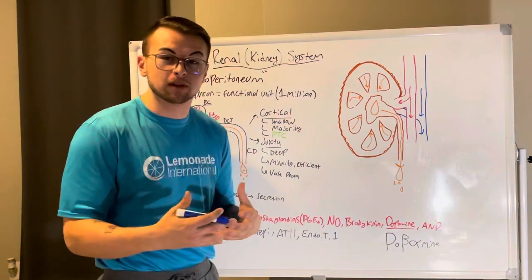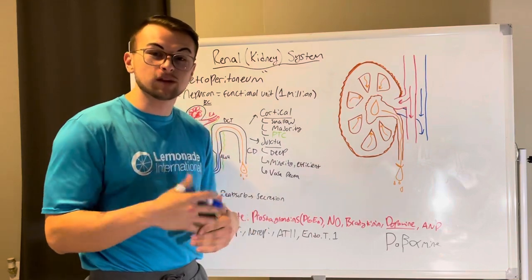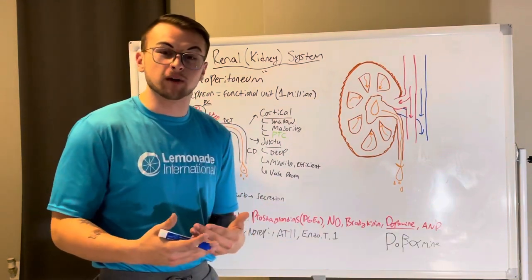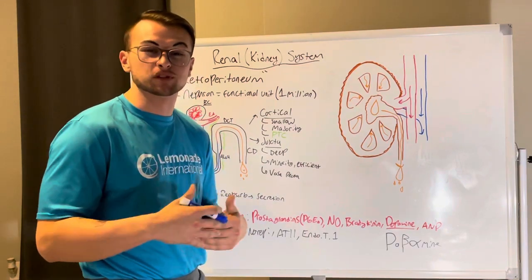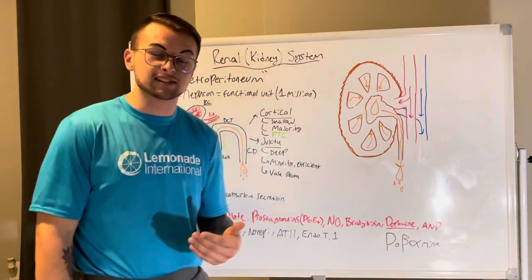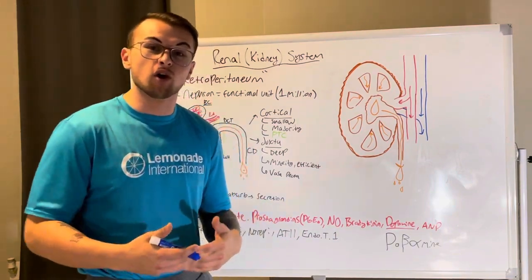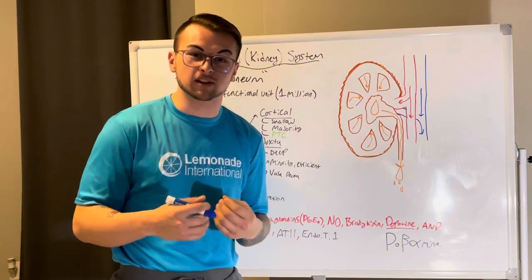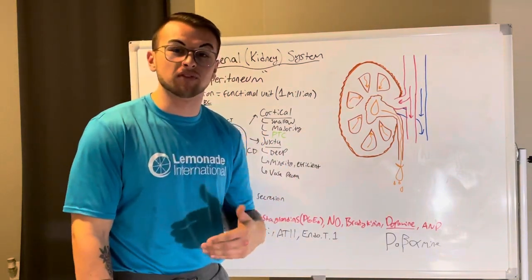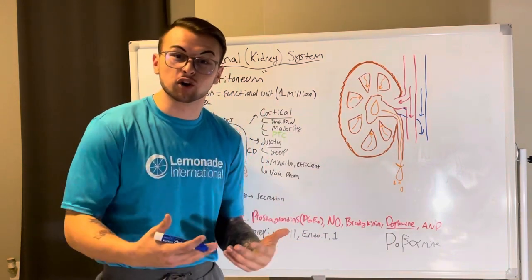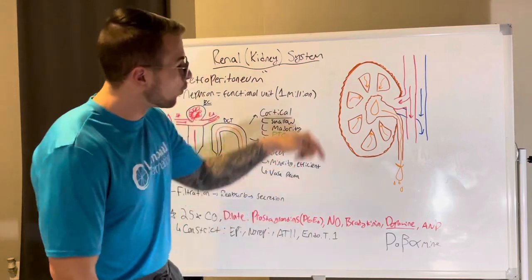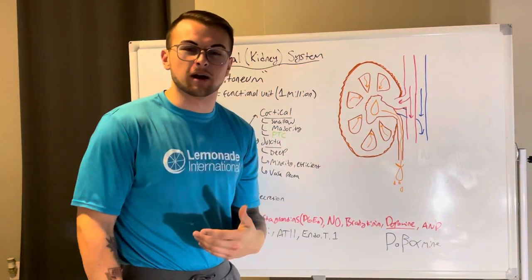Juxtamedullary nephrons — a great way to remember them is to think of cats. Cats have a lot of juxtamedullary nephrons, which is why their urine smells very concentrated. These nephrons are only about 15% of the total, but they are extremely efficient at concentrating urine. They are deeper inside the kidney, which is why they're so good at their job.